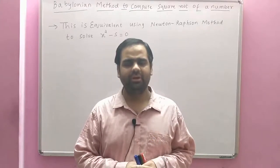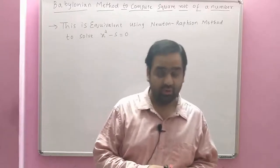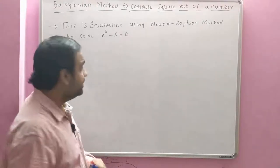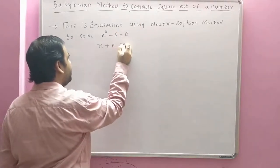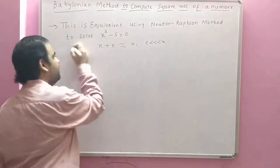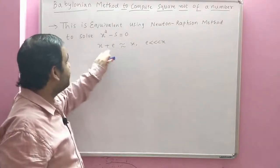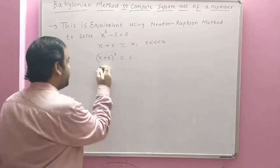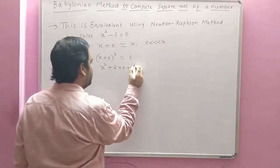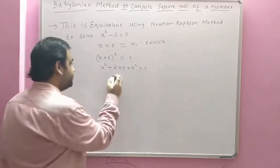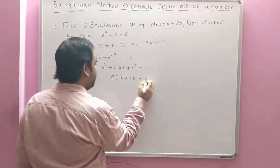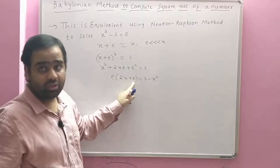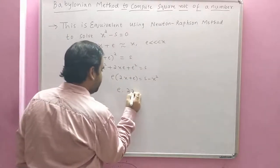The Babylonian method is equivalent to the Newton-Raphson method of solving the equation x² minus s = 0. Whenever we compute the square root of a given number there is some error range in terms of decimal. We call that error range e, so x + e is approximately equal to x, where e is much less than x. Substituting x + e into the equation gives (x + e)² = s, or x² + 2xe + e² = s. The error term becomes e(2x + e) = s − x².